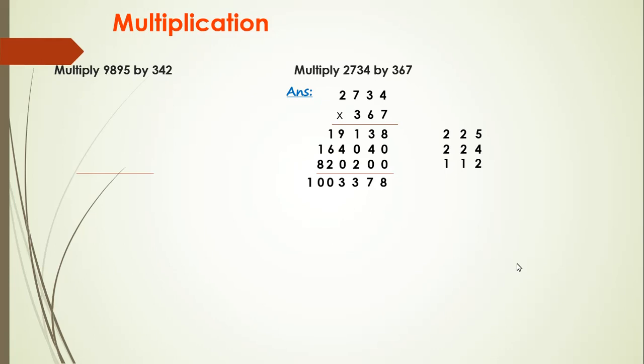Let's take a problem: multiply 9895 by 342. First, we will arrange the first number in columns with little space between each digit. We will take the second number and arrange it below exactly with respect to place names.